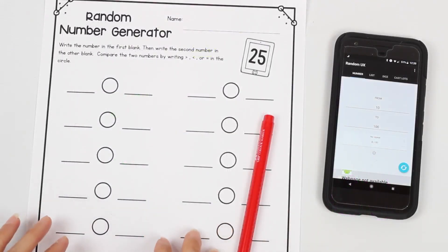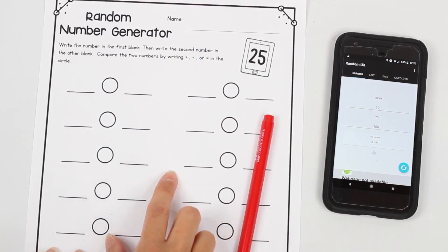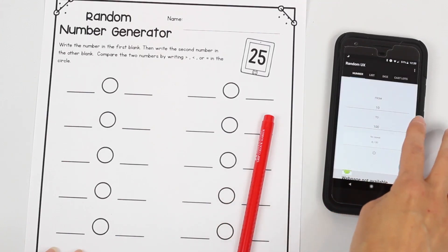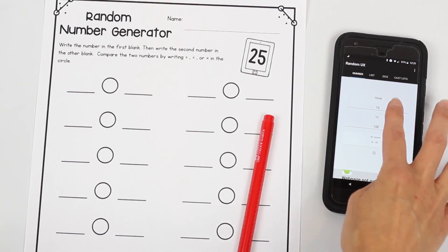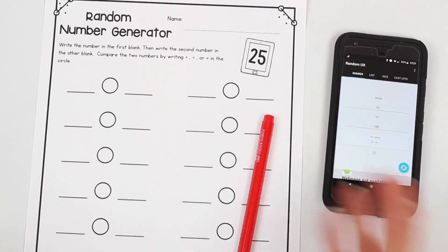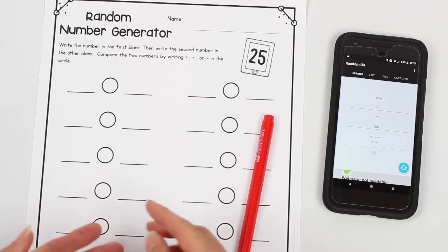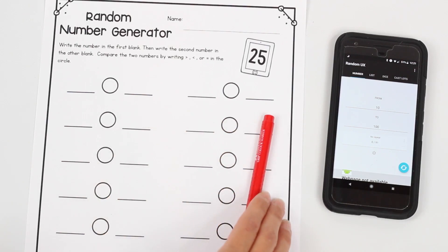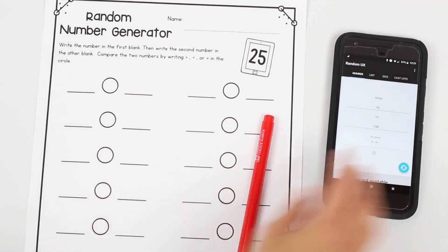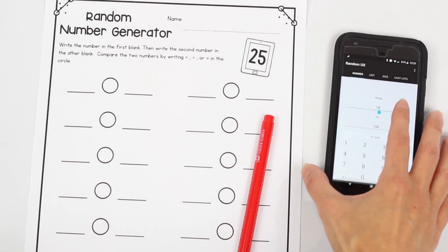Instead of just using boring worksheets, I like to get the students interactive and involved with the content that they're working on. And one easy way to do this is to use a random number generator. This is a number generator app I downloaded for free on my phone. You can even go to the Google search bar and type in random number generator and it will pull up a number generator for you. But I like to use it because then it will give students numbers that they can then practice with. Whether you're working on addition, subtraction. Here I'm going to use it to make inequalities.